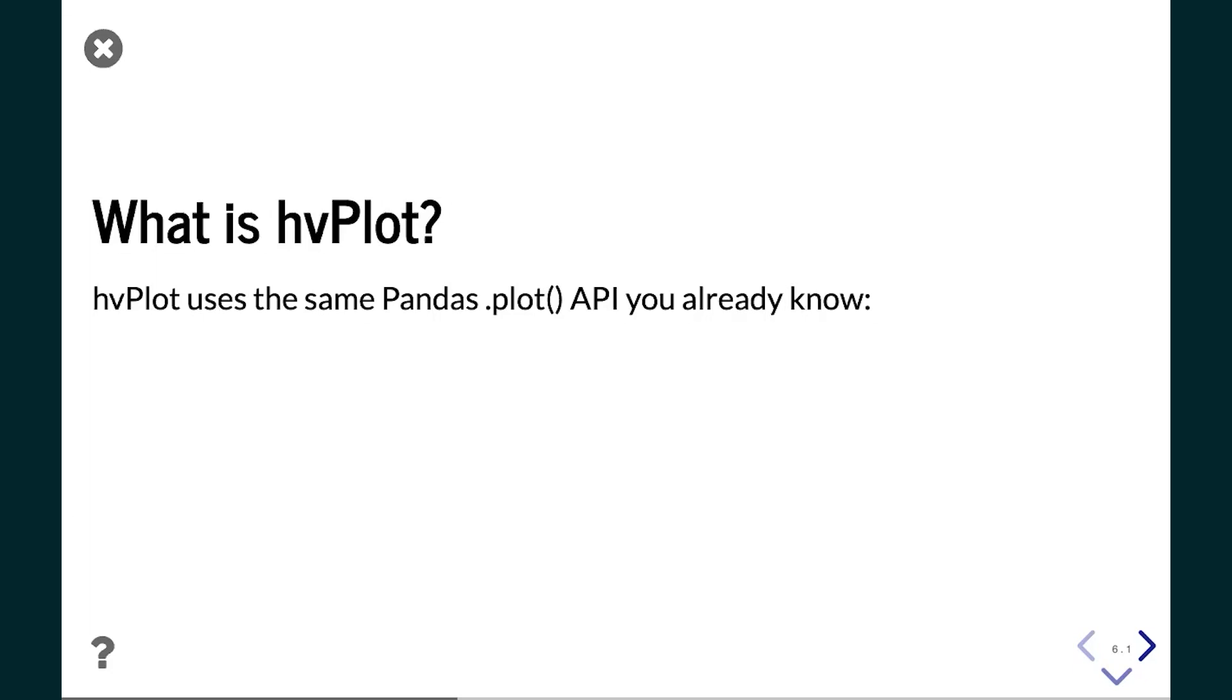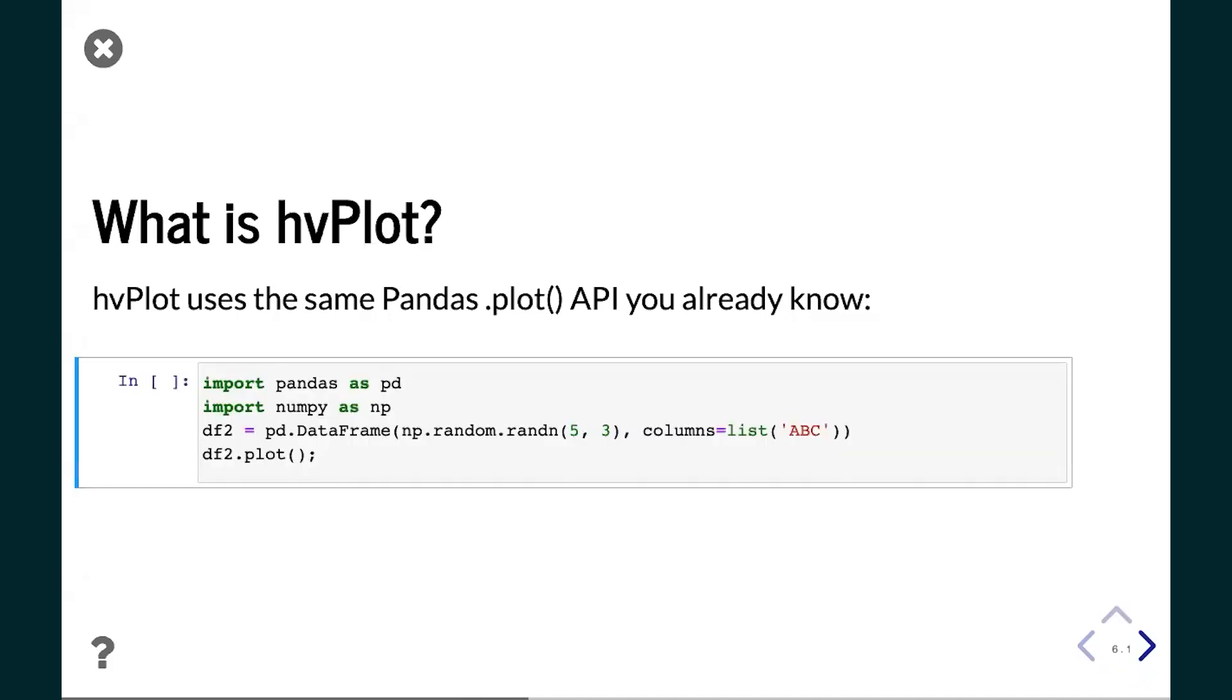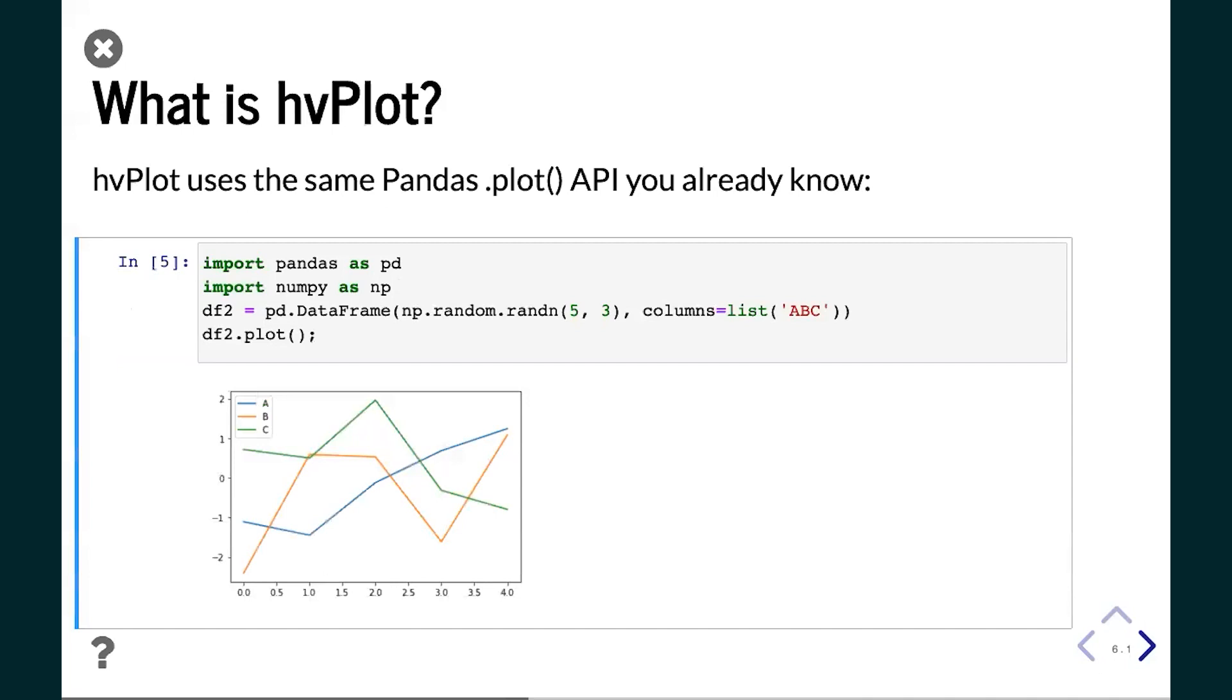Moving along to hvPlot. hvPlot also uses a Pandas API. In fact, it uses the pandas.plot API. Here's the pandas.plot API, not using hvPlot, just the standard basic one. This one's based on matplotlib. If you have a Pandas dataframe, you can call .plot and get a plot.